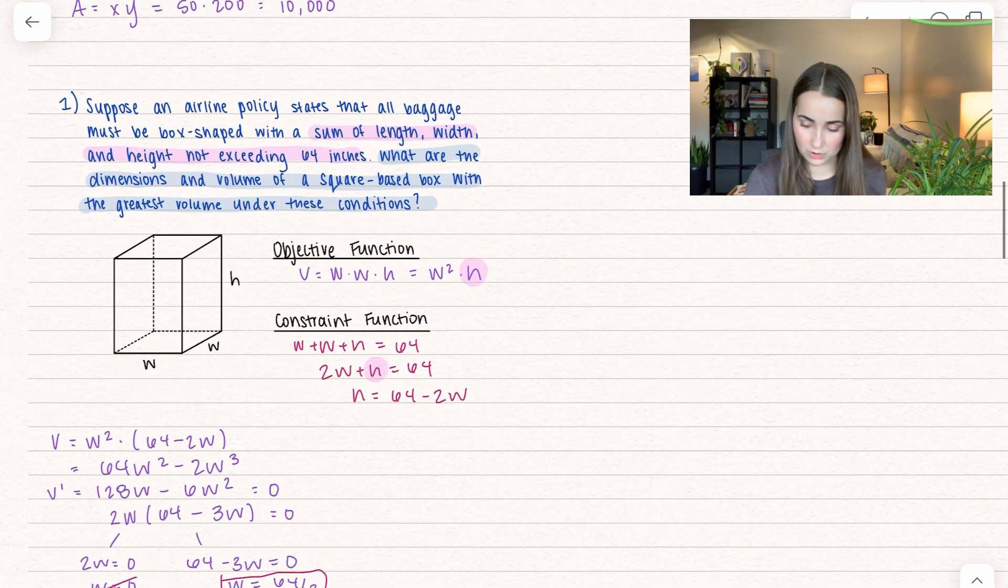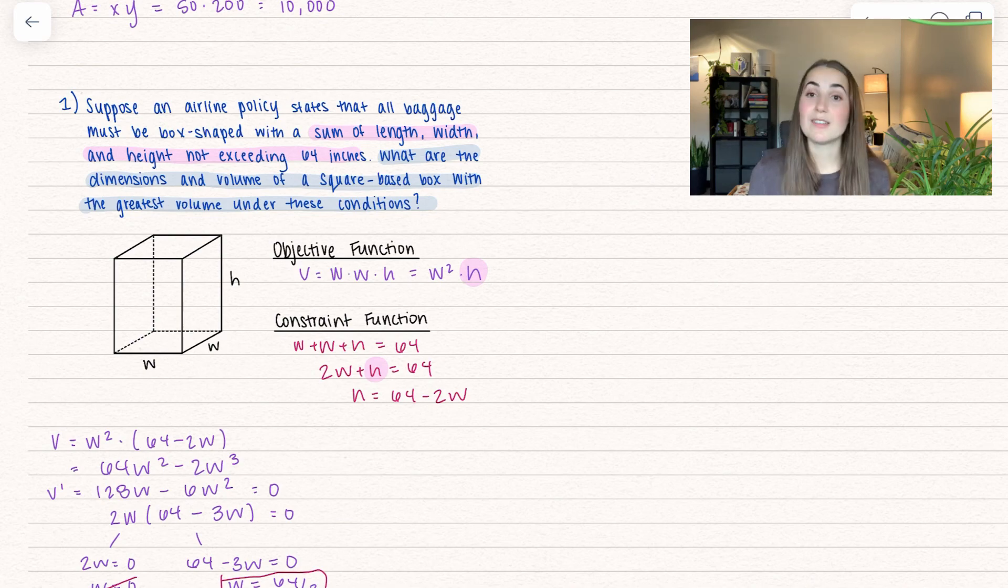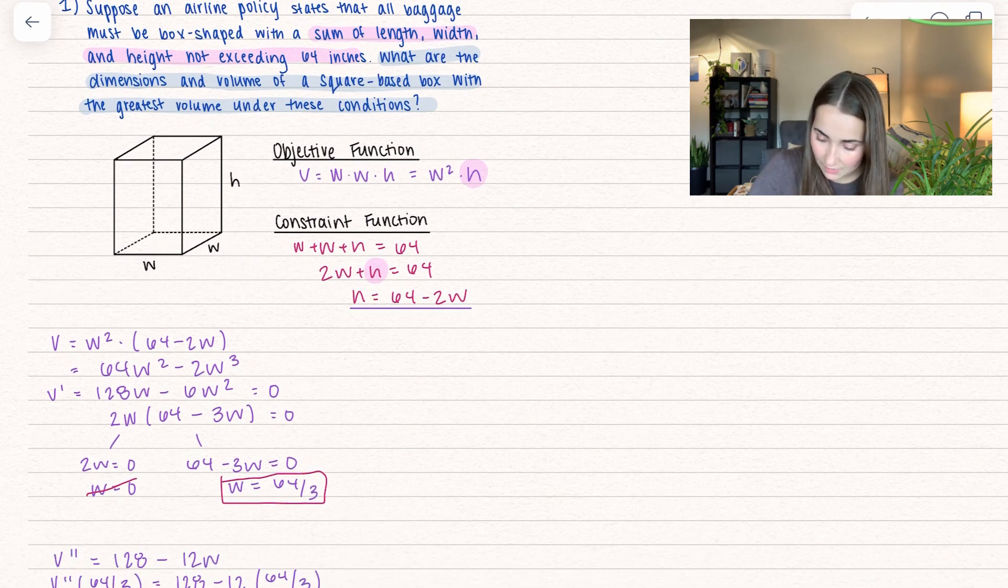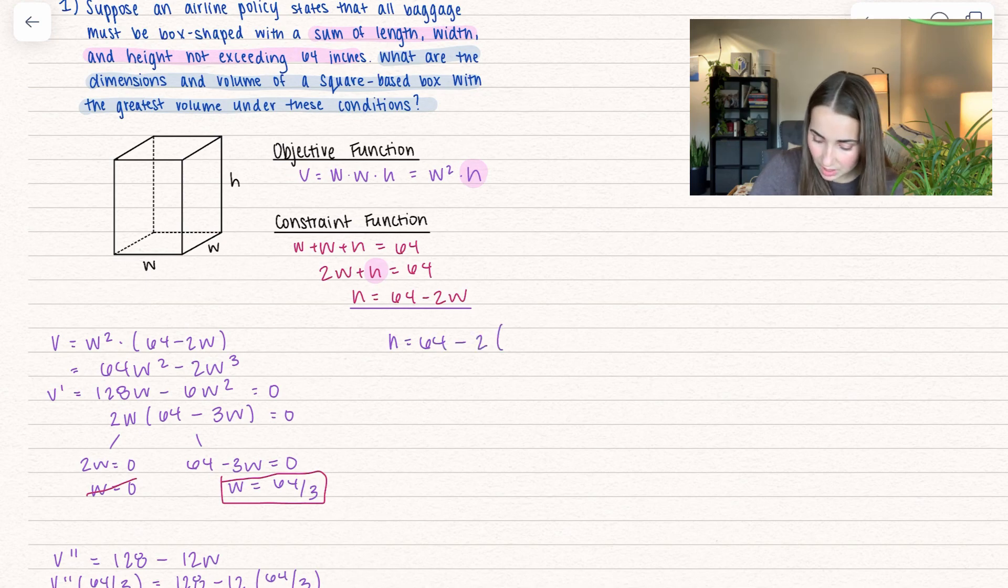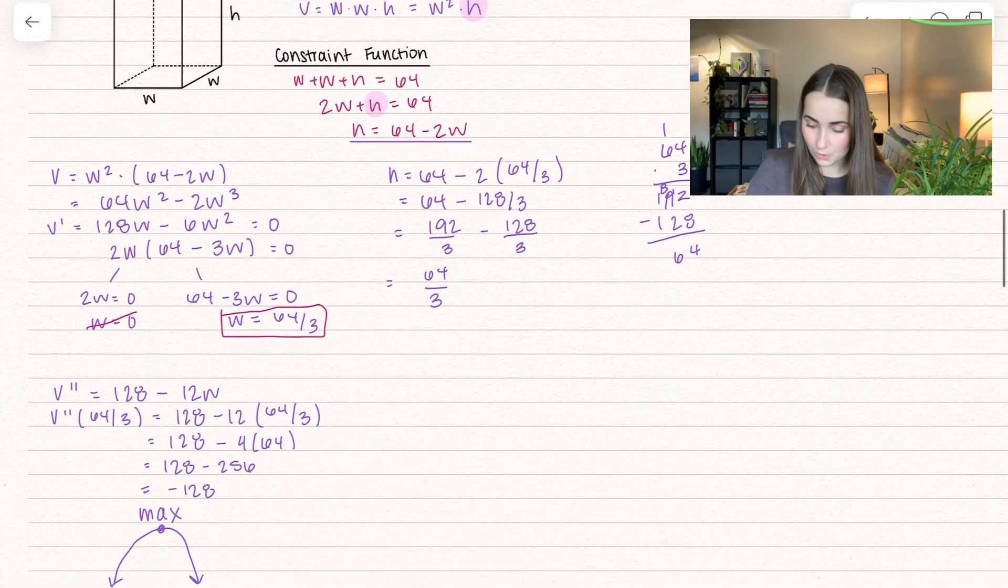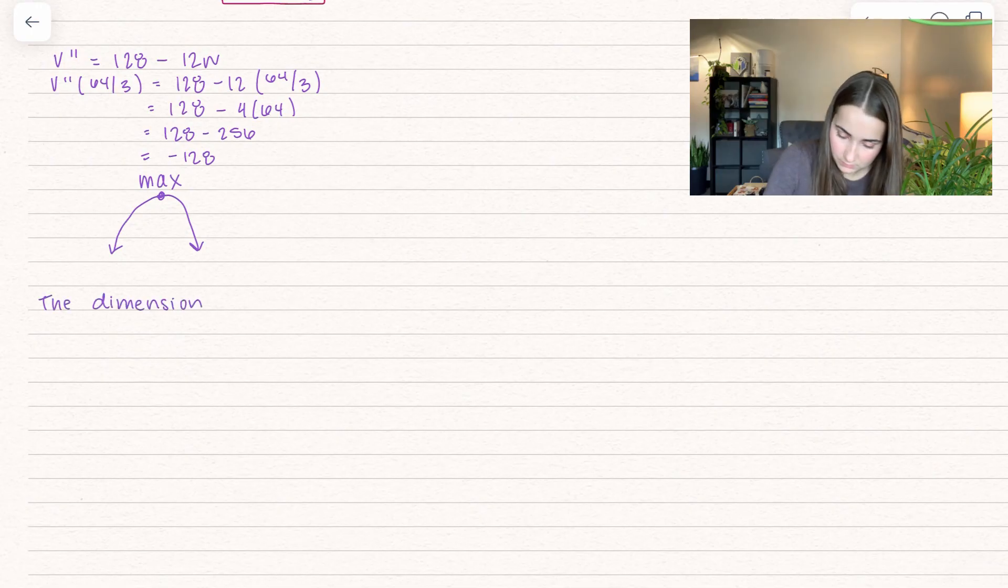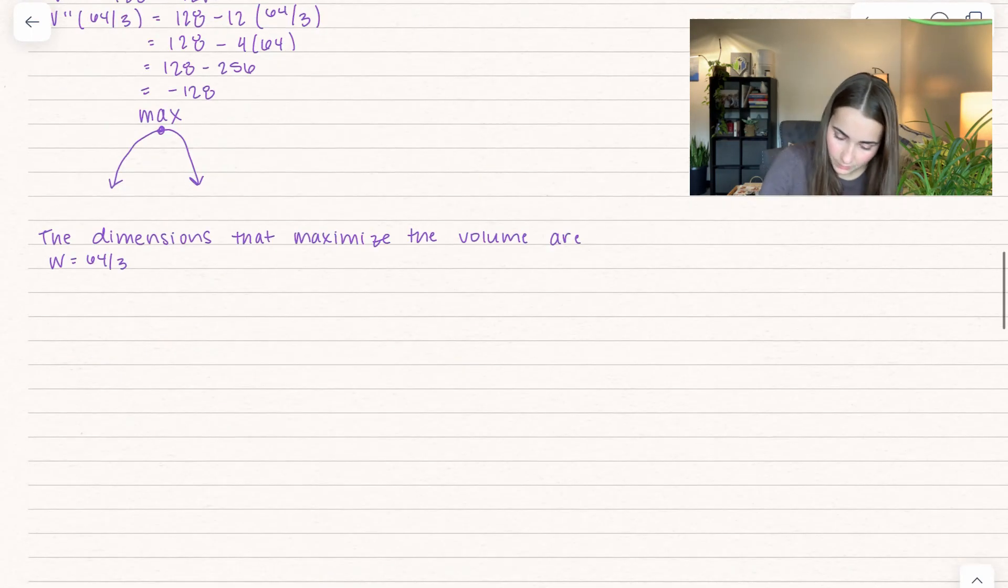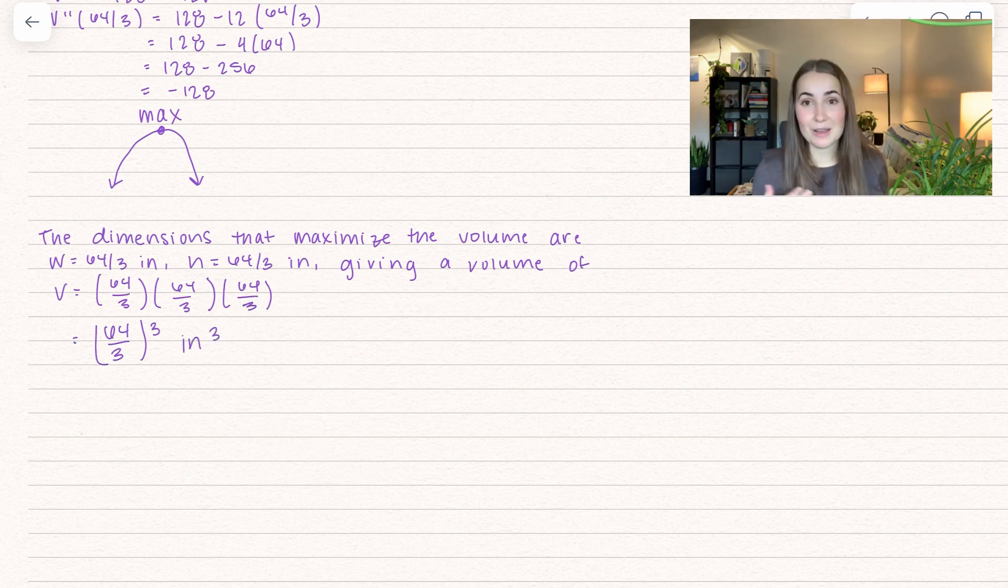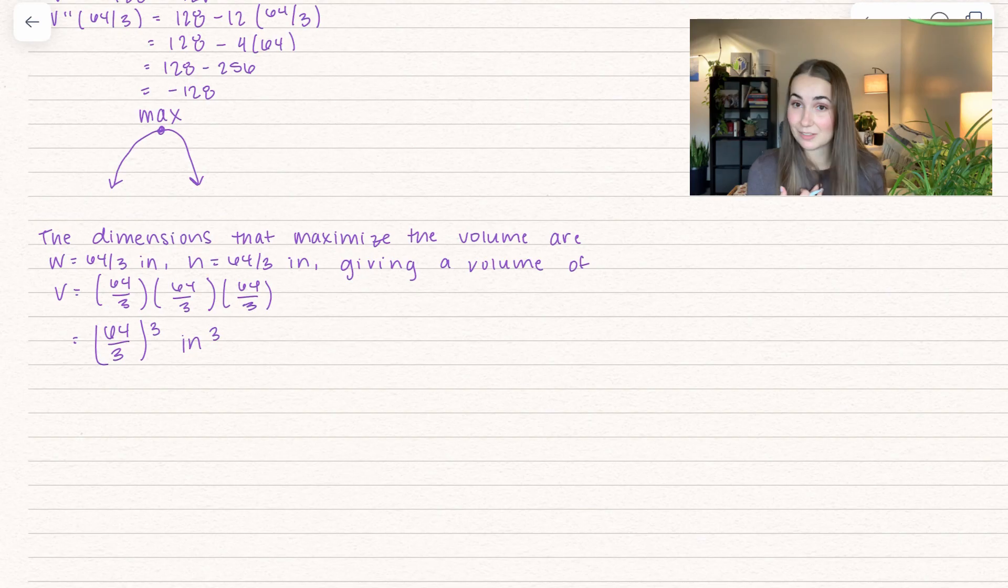Let's answer the actual questions. We want the dimensions and the volume. We need to find the corresponding height, and we'll do that by plugging back into our constraint function. If height equals 64 minus 2 times width, I can plug in our width of 64 divided by 3. I got a height of 64 over 3. So for the volume, I did not multiply it out - I just left it as 64 over 3 cubed. I think that's totally fine. Again, it depends on your professor. I think if you're taking an exam, you would not be expected to multiply that out.